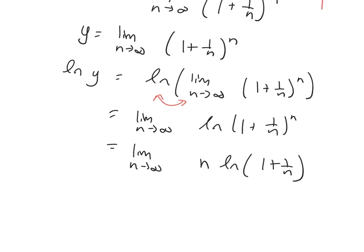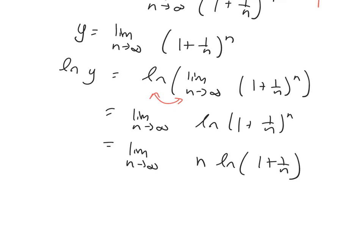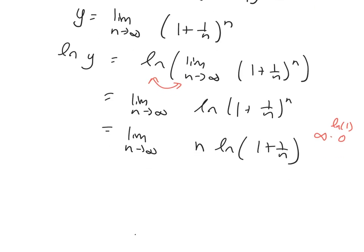Well, if I look at the form of this limit, I'm getting infinity times ln of 1, which is 0. Infinity times 0. That's not in a form I can use L'Hopital's rule on. So I move the n to the denominator in the following way. Limit ln 1 plus 1 over n over 1 over n. And now you're getting 0 over 0 for this limit. And you can use L'Hopital's rule.